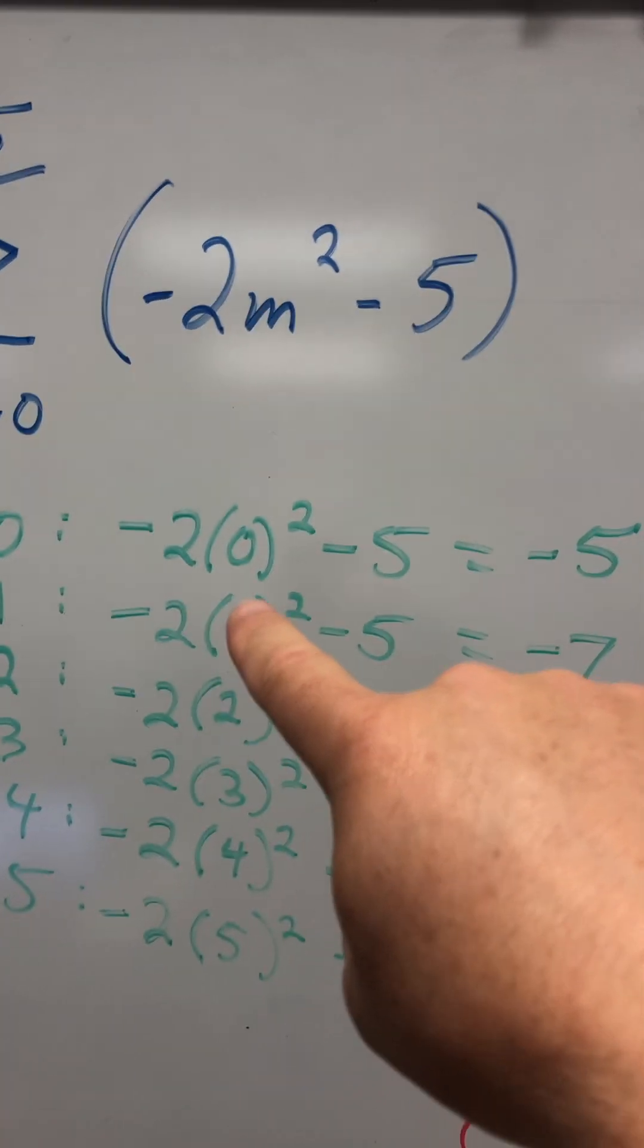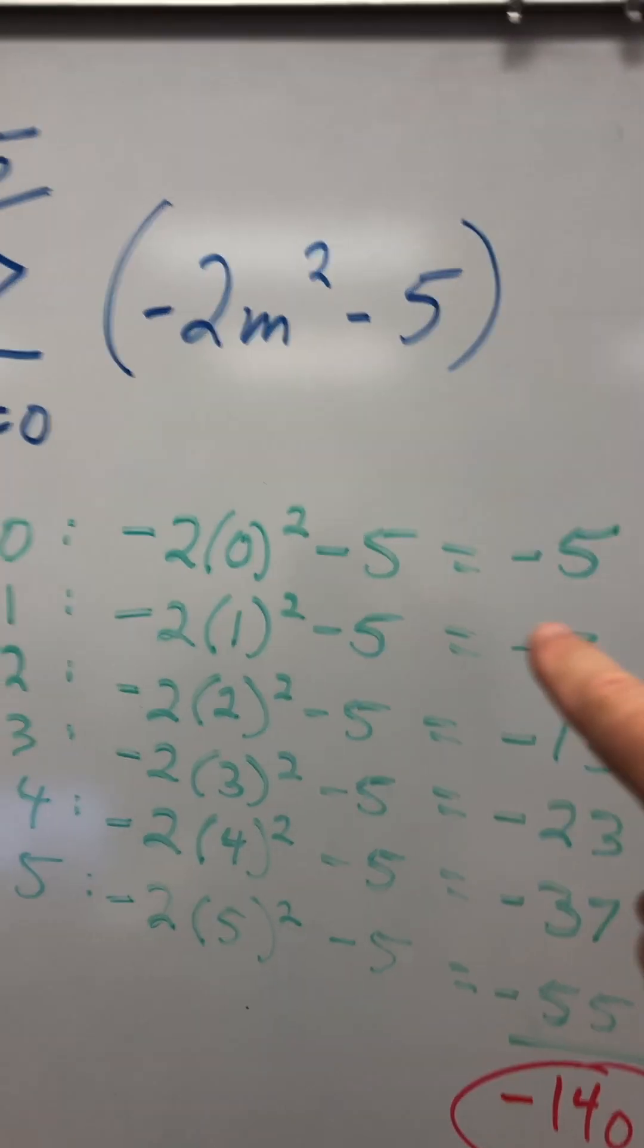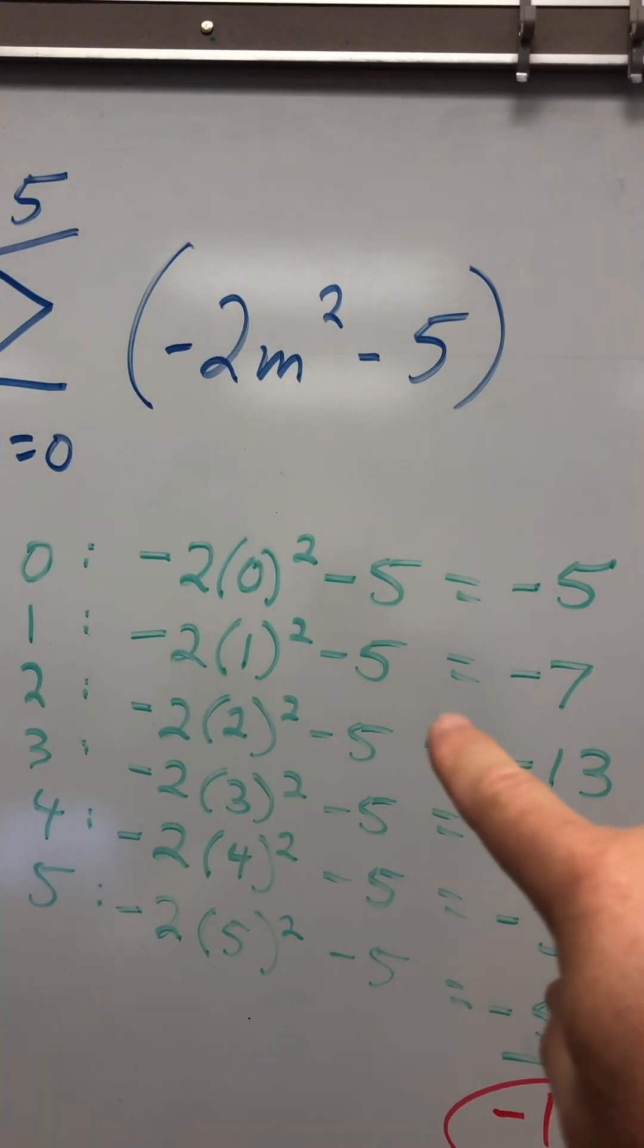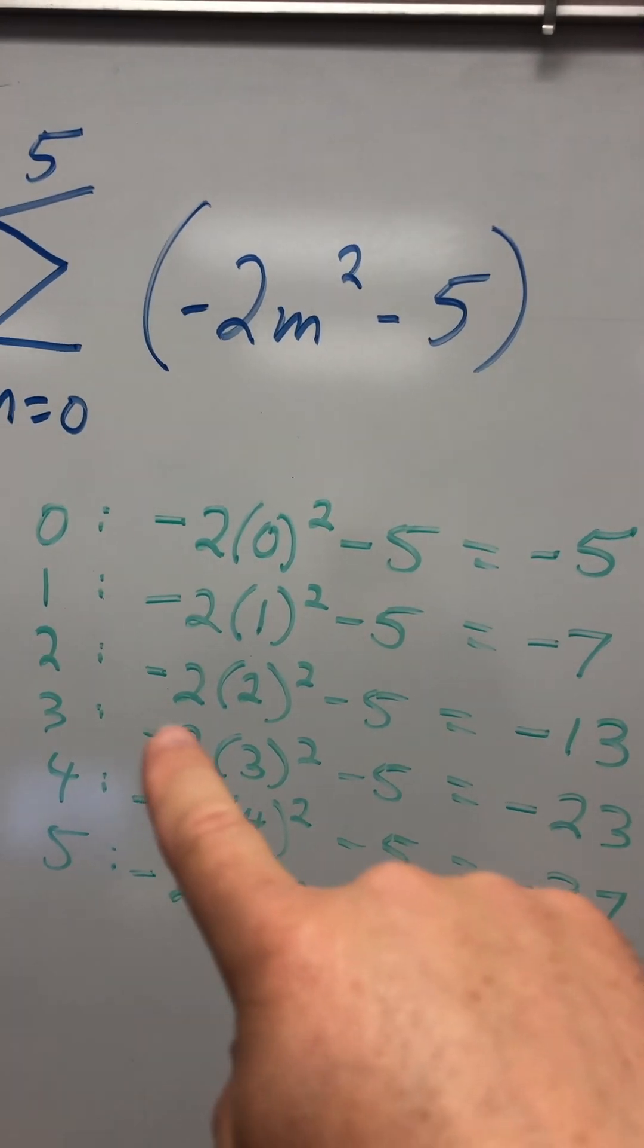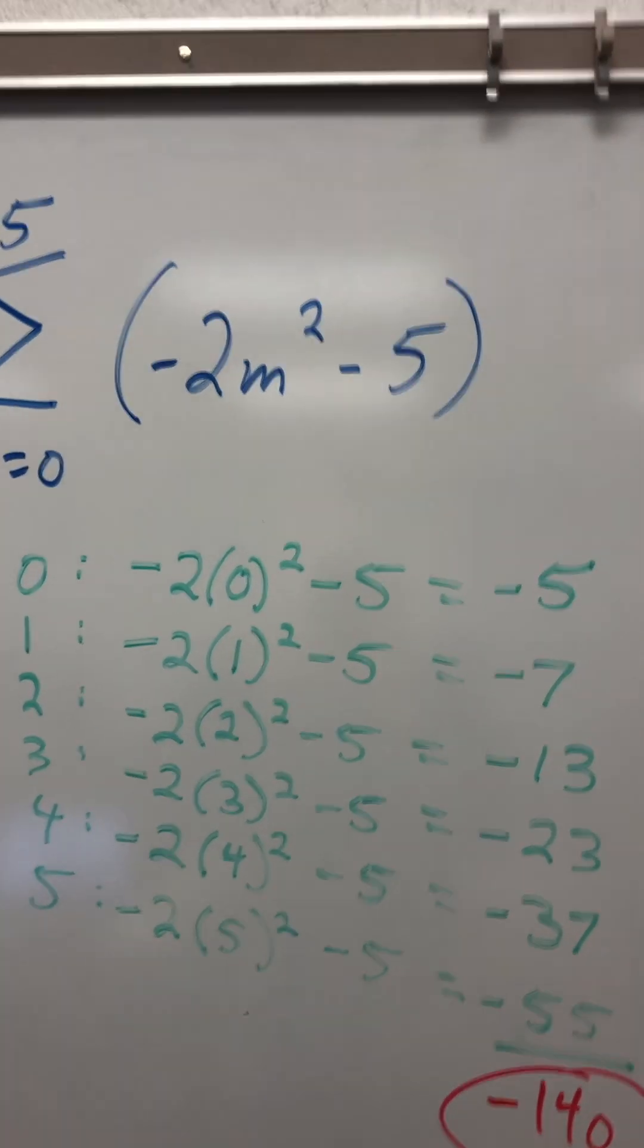What's negative two times zero squared minus five? Negative five. Negative two times one squared minus five? Negative seven. Negative two times two squared minus five is negative thirteen. Negative two times three squared minus five is negative twenty-three.